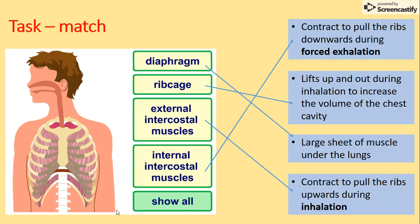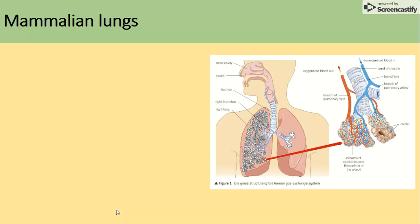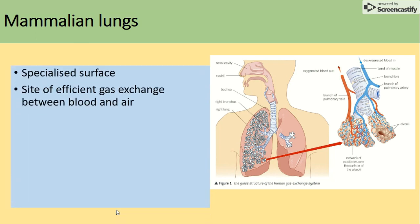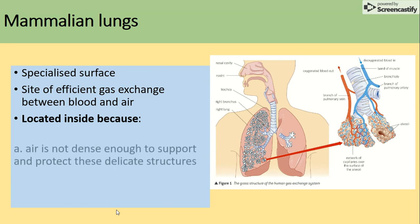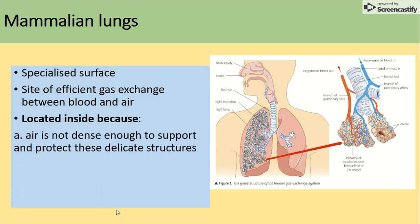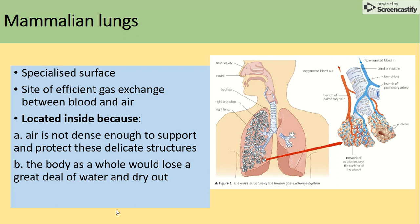The lungs have a specialized surface for efficient gas exchange between blood and air. They are located inside the body because air is not dense enough to support and protect those delicate structures, and the body would lose a great deal of water and dry out if they weren't inside.